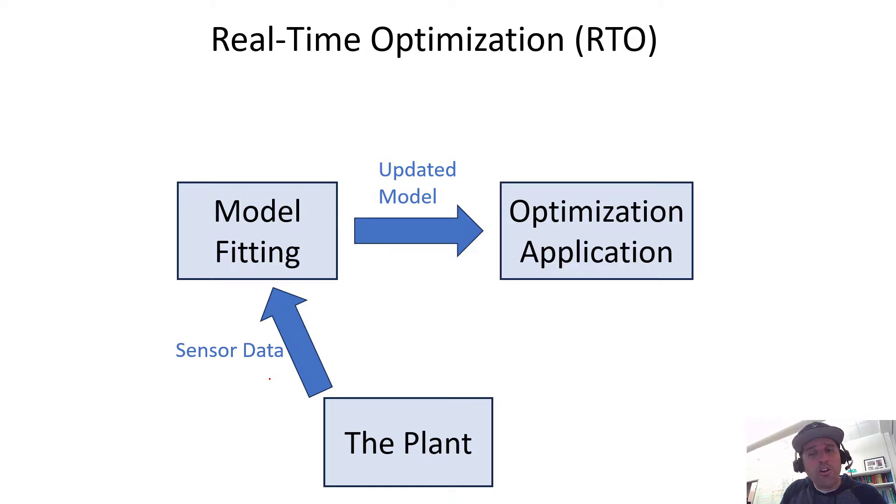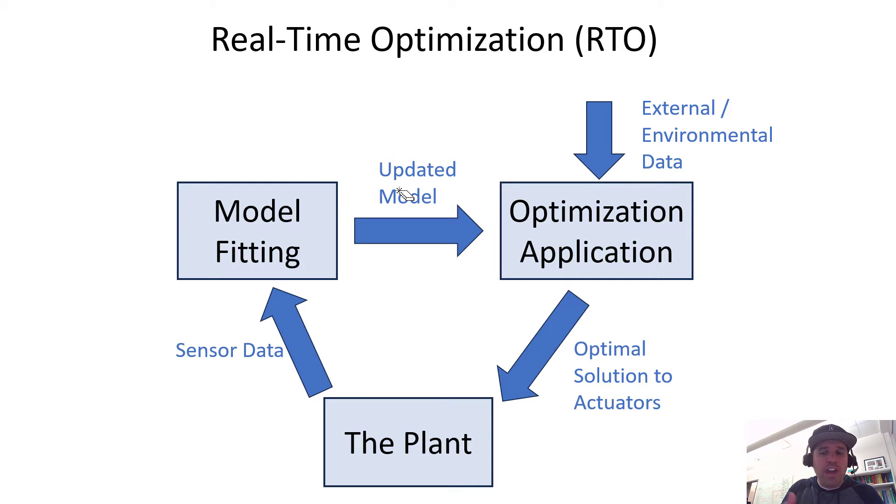Once you've got that model, you send that updated model to your optimization application. You would use this optimization to solve for optimal conditions, but first you would want to bring in external or environmental data. For example, if the product prices or feedstock prices change, you want to incorporate those new prices into your model because those would affect your objective function. You want to bring in that new data here, then solve for optimal operation based on knowing how the plant has changed and updating your model accordingly, and then knowing how the environmental or market conditions have changed. Then you solve for optimal operation and you send that optimal solution down to the actuators in your plant. And this is basically how real time optimization works.